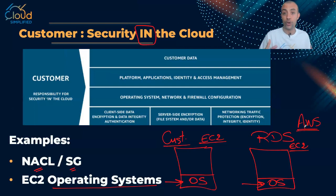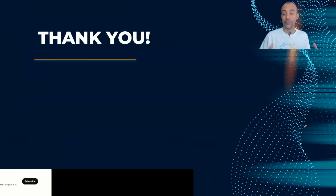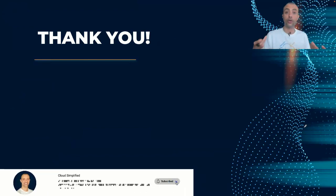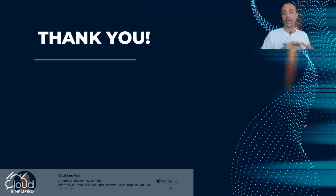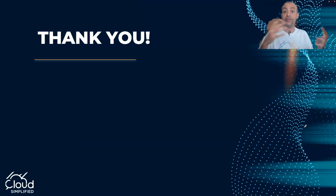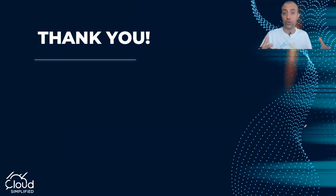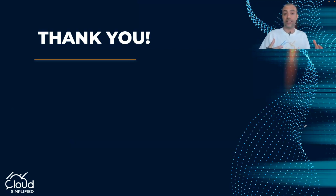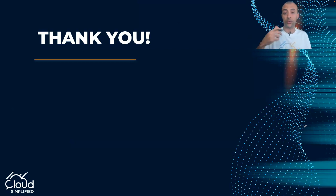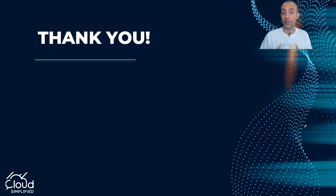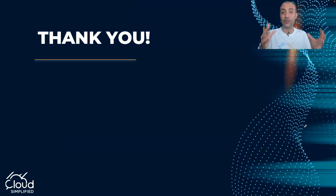With this we come to the end of this session on the Shared Responsibility Model. To summarize: AWS is responsible for the security of the cloud - the physical security of data centers, regions, and availability zones. Customers are responsible for security inside the cloud - configuring network access control lists and security groups, protecting important assets like databases by placing them in private subnets, and patching EC2 operating systems. I hope the concept is clear. If anyone has questions, please put them in the chat. Thank you and see you in the next video.